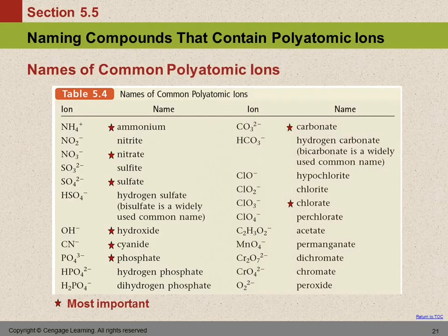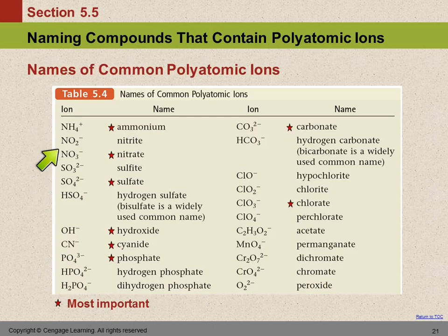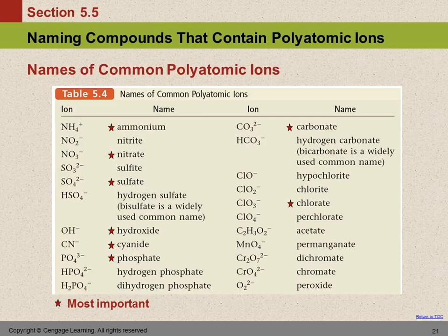These are the polyatomic ions. The ones with stars are the most important because we see them most frequently. Ammonium is the only positive polyatomic ion. These two — NO2 and NO3 — are very similar: one has two oxygens, the other has three, and they both have a minus-one charge. Their names are very similar also, so we have to pay attention to details — one letter different and one number different.